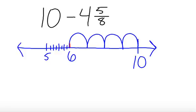And go back one, two, three, four, five. That on my number line would be five and three eighths. One eighth, two eighths, three eighths.